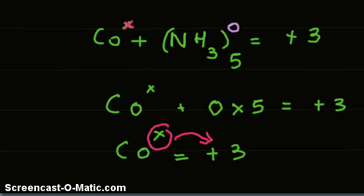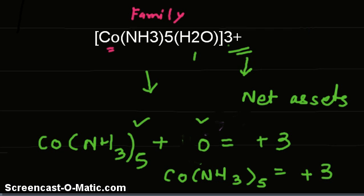This is how we solve problems where we find the oxidation state of the central metal ion. To recap, consider the complex ion as a family.